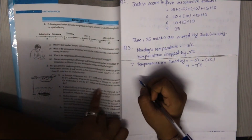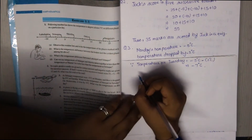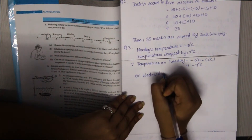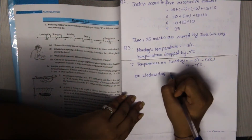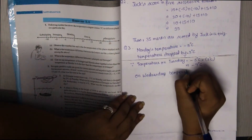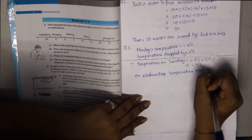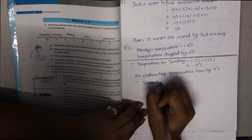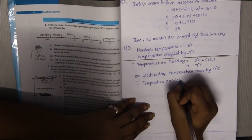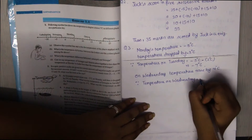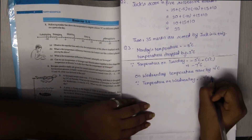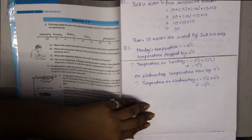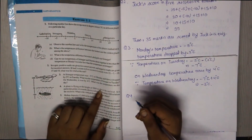On Wednesday the temperature rose by 4 degree Celsius. What was the temperature on this day? Temperature on Wednesday rose by 4 degree Celsius. Therefore temperature on Wednesday is equal to temperature on Tuesday, that is minus 7 degree Celsius, plus 4 degree Celsius. So the temperature on Wednesday is minus 3 degree Celsius.